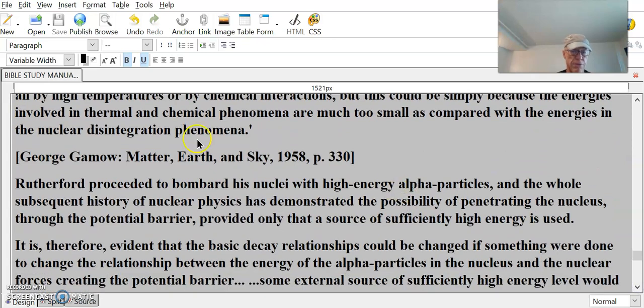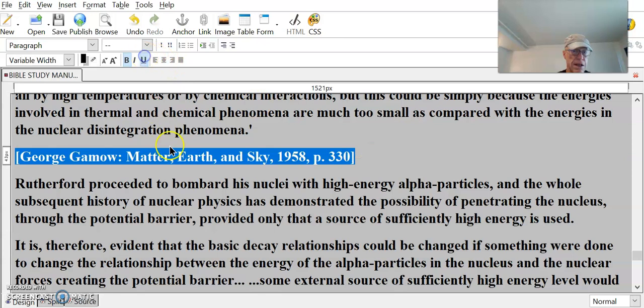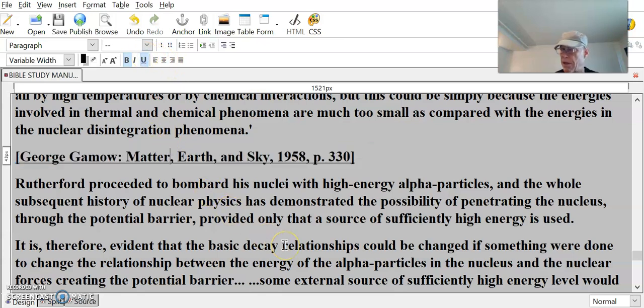Rutherford proceeded to bombard his nuclei with high energy alpha particles, and the whole subsequent history of nuclear physics has demonstrated the possibility of penetrating the nucleus through the potential barrier provided only that a source of sufficiently high energy is used.